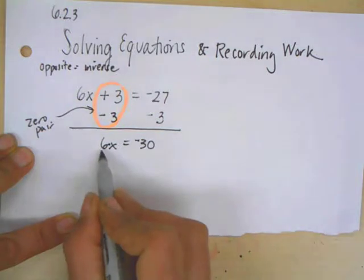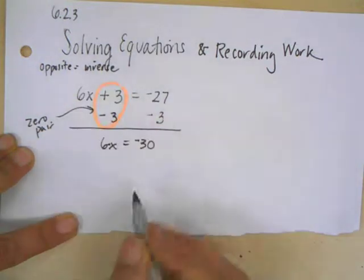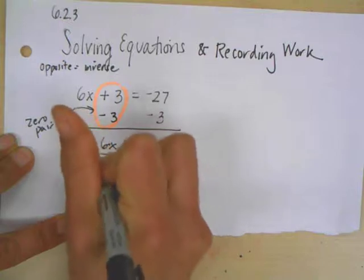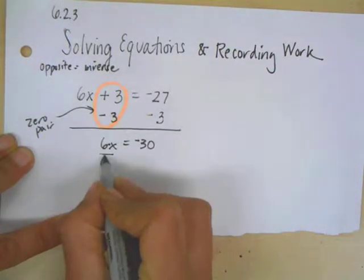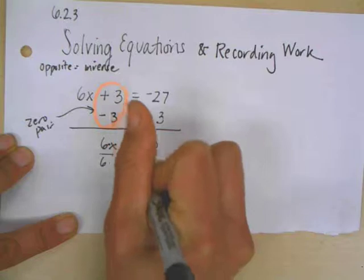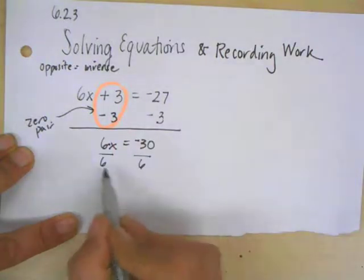So I'm going to say, what's the opposite of 6 times? The inverse of 6 times is divide by 6, and we can show it using the fraction bar. So I'm going to divide by 6 to both sides. Once again, I'm maintaining that they're both equal.